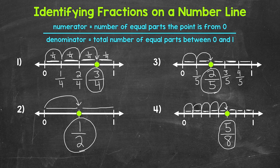Let's label the rest of the number line. We start with zero — zero eighths. Then we have one eighth, two eighths, three eighths, four eighths, five eighths, six eighths, seven eighths, and then eight eighths is one whole.